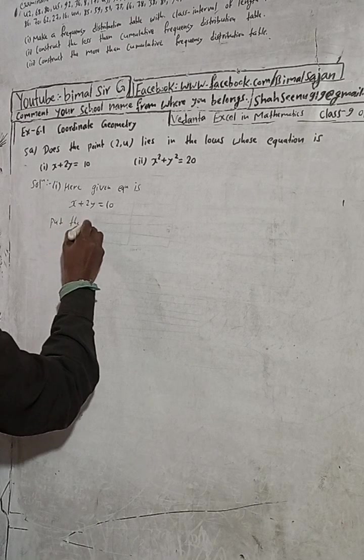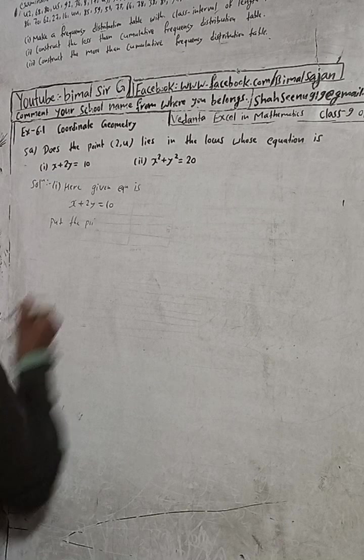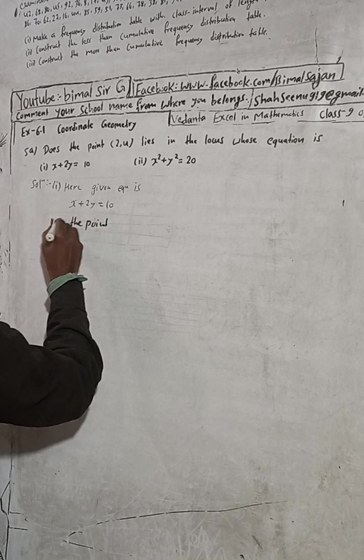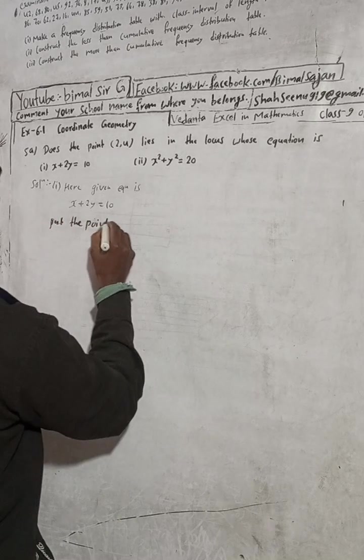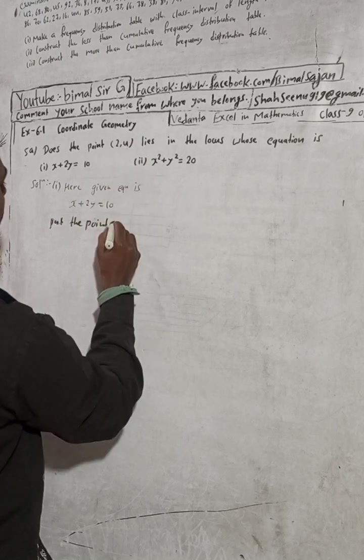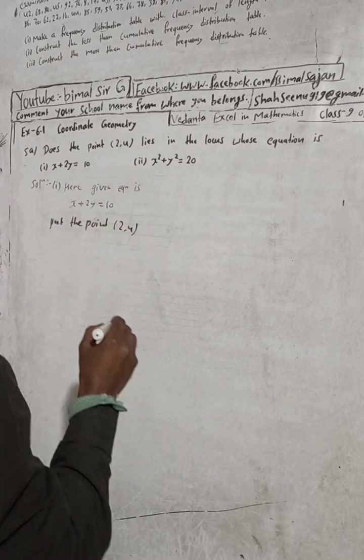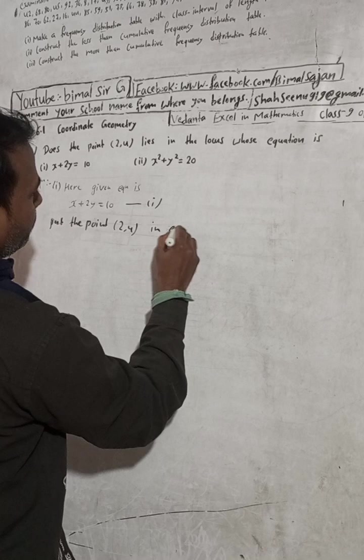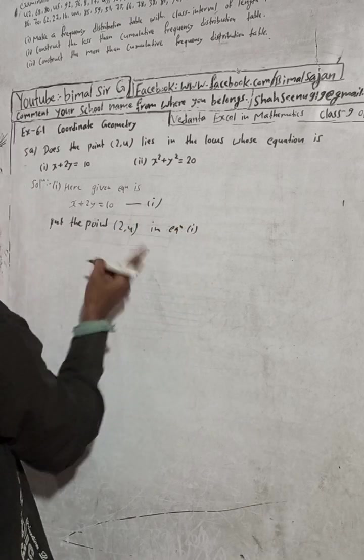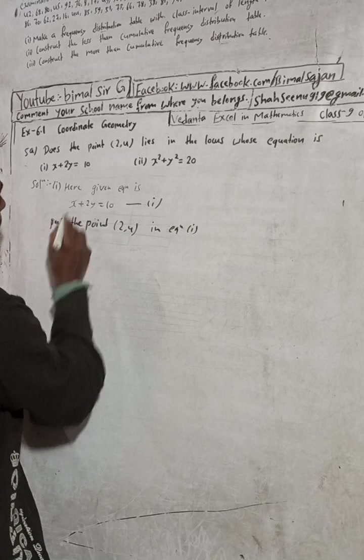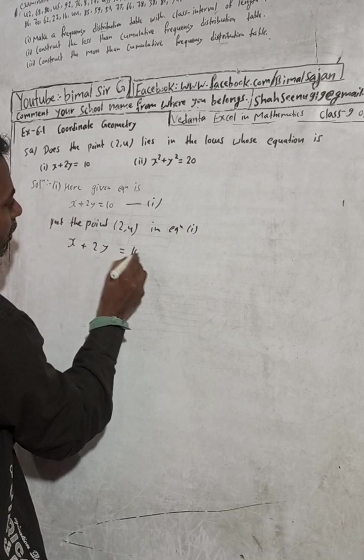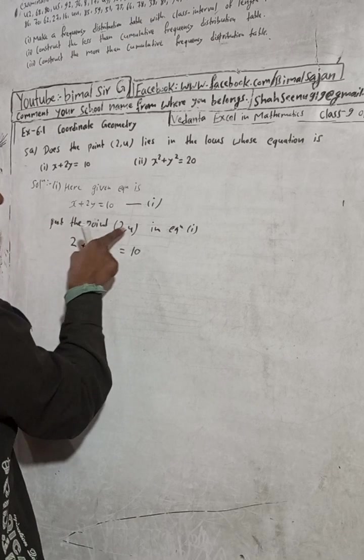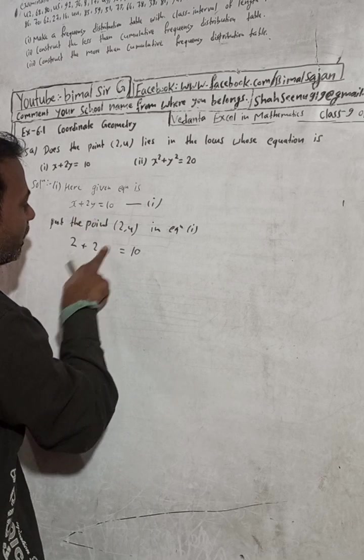Put the point (2,4) in equation one. So putting point means in place of x put 2, this is x. x + 2y = 10, yes. So in place of x put this 2, so this is 2. In case of y, in place of this y put here 4.